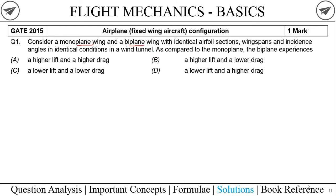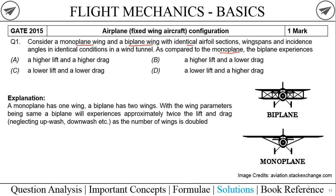They are comparing a monoplane wing and a biplane wing where all conditions are identical. The question is: compared to a monoplane, what does the biplane configuration experience in terms of lift and drag? The basic difference is simple — in a monoplane there is only one wing, and in a biplane there are two wings. Mono means one and bi means two. These aircraft were used during World War times.